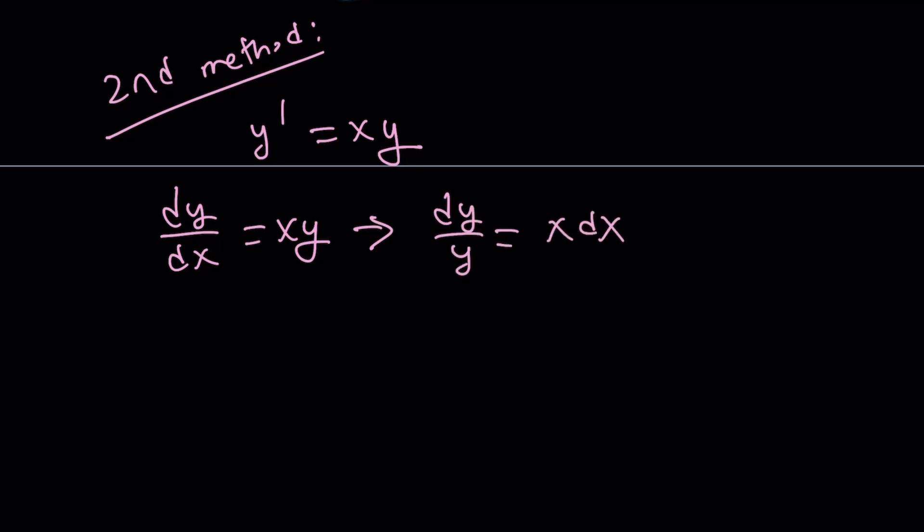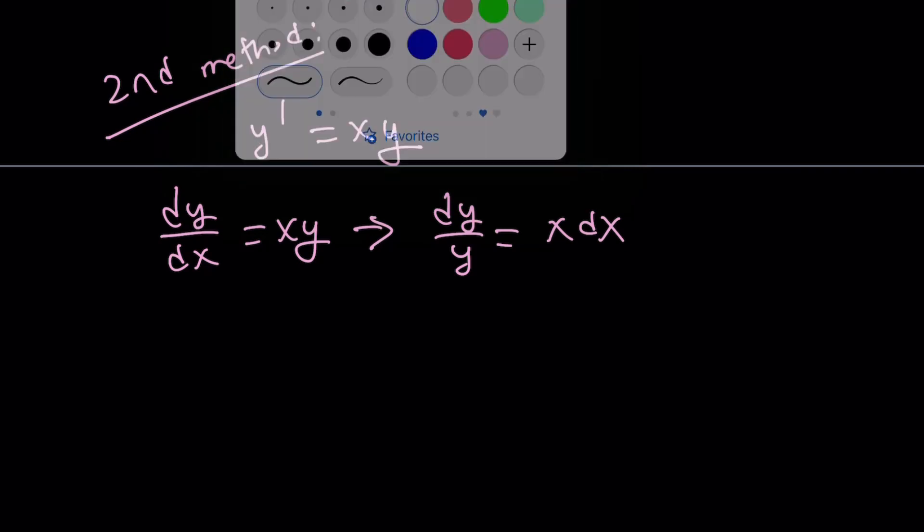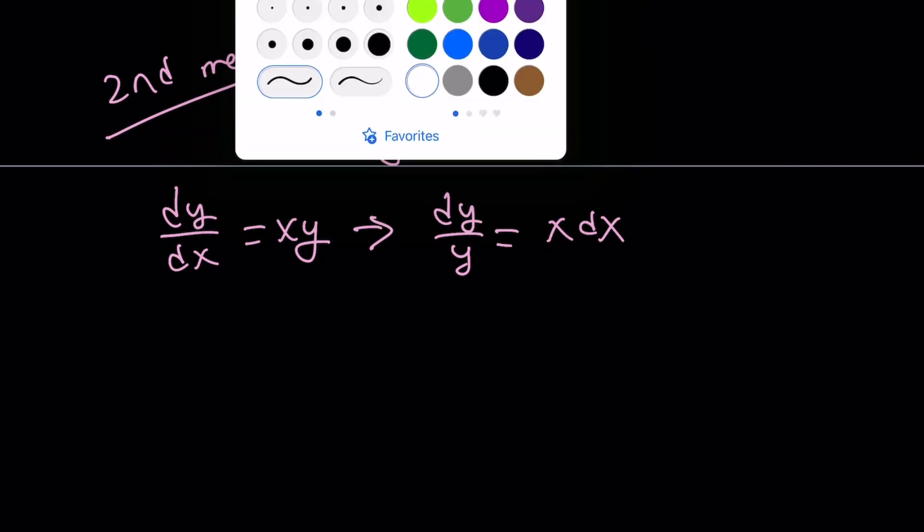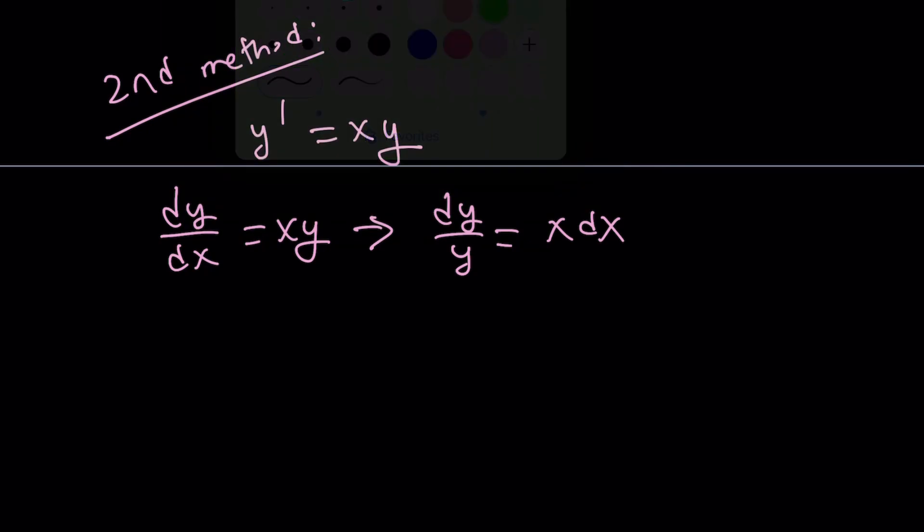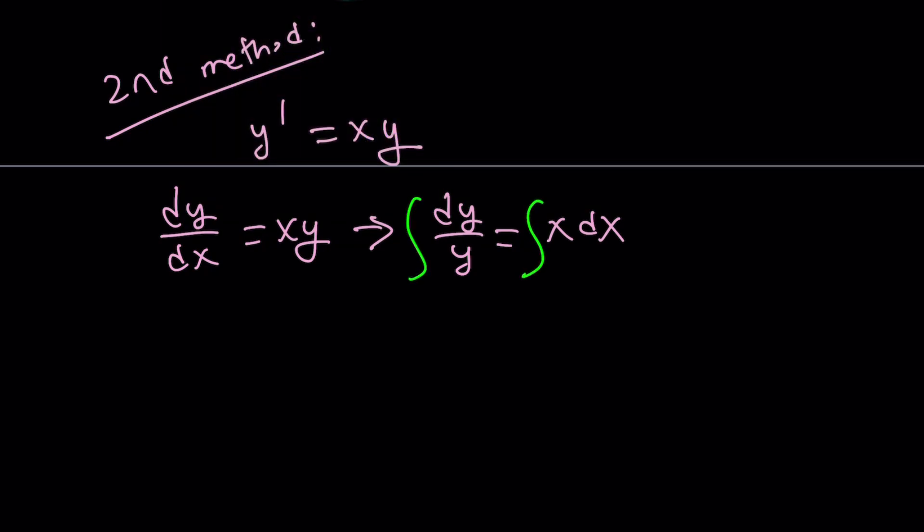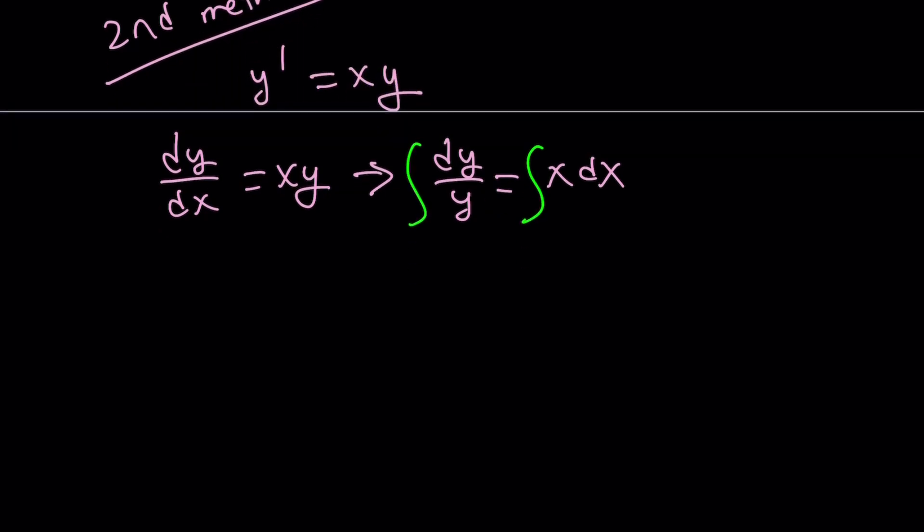And now, integrating both sides, we're going to get the following, right? And if you integrate, again, I'm going to assume y is positive. So, it's just going to be ln y. The integral of x is x squared over 2 plus c as before.